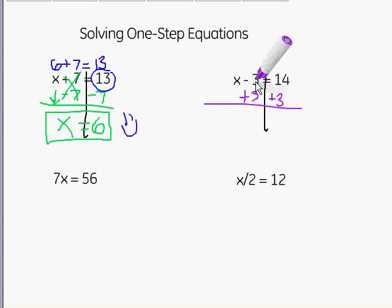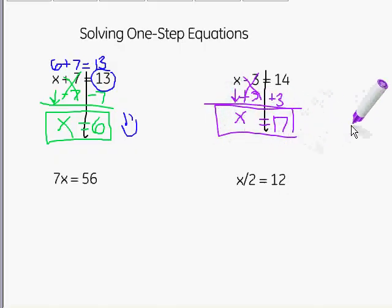Negative 3 plus 3 is 0. So because those are opposites or inverse, those cancel each other out, leaving me with just this x to bring down, which is exactly what I want. Now I have that x alone on that side. And we can simplify over here. 14 plus 3 gives me a total of 17. So x equals 17.